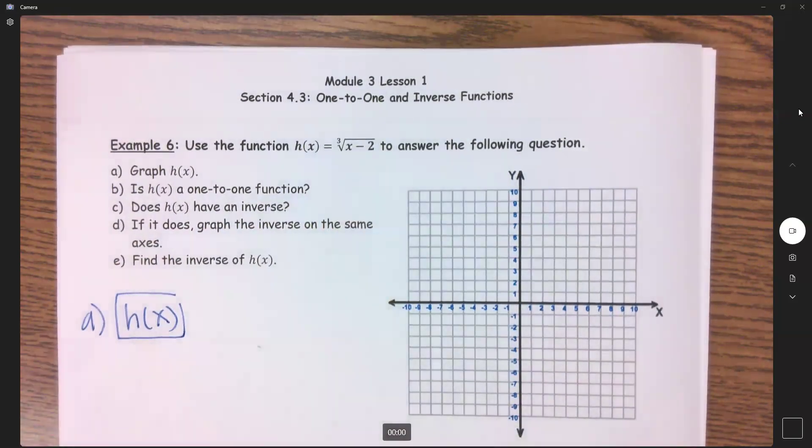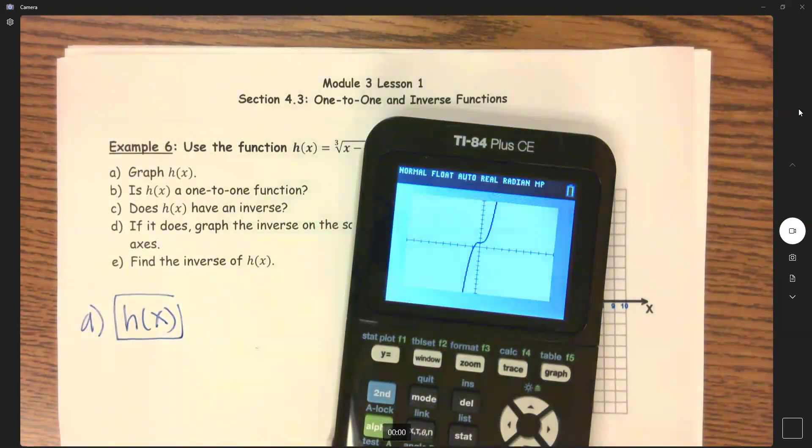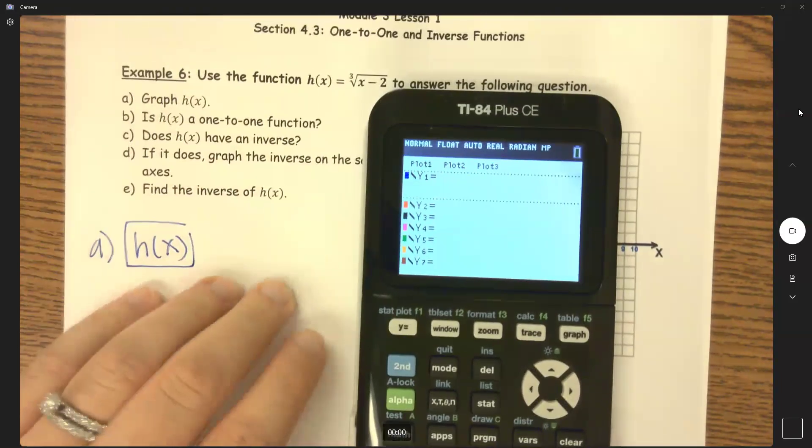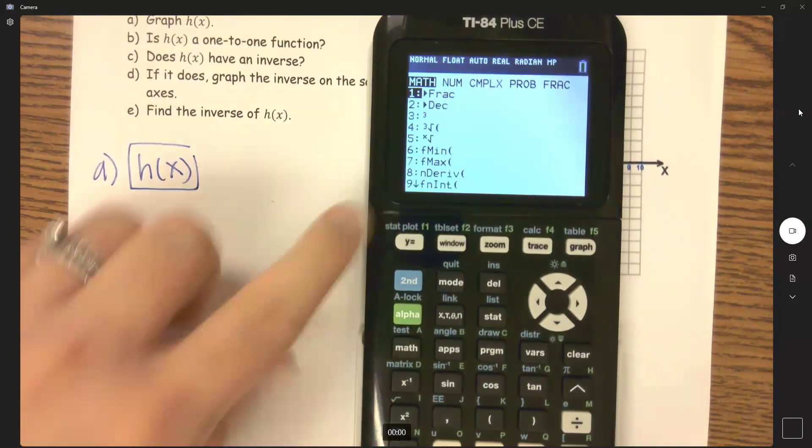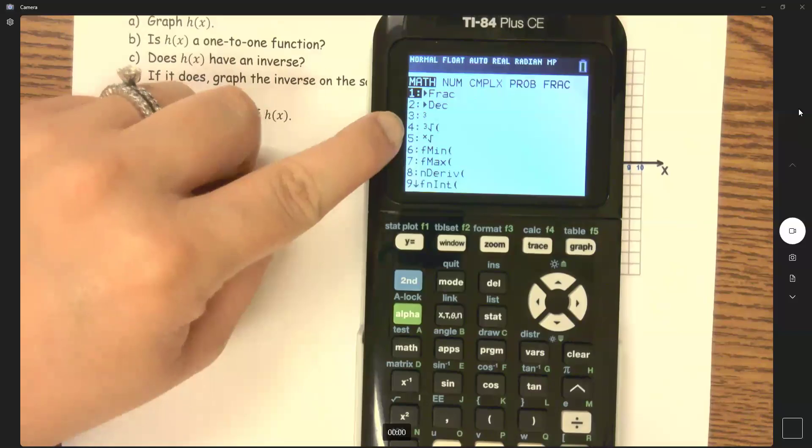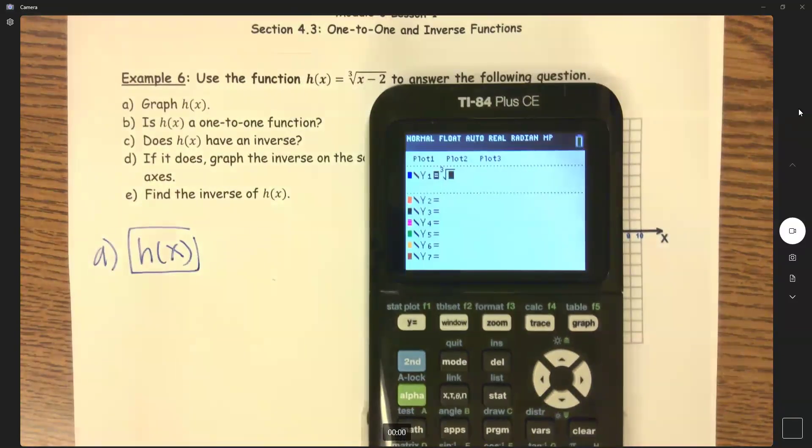So I'm going to put this in my calculator. To get the cubic root, I think we've went over this before, but as a reminder, we're going to go to math. And then it's number four right here. So either arrow down or just hit four. And now we have the cubic root.